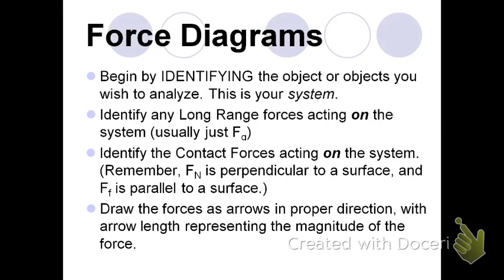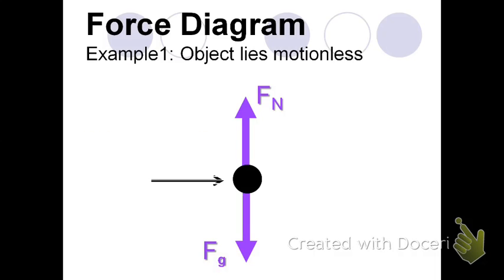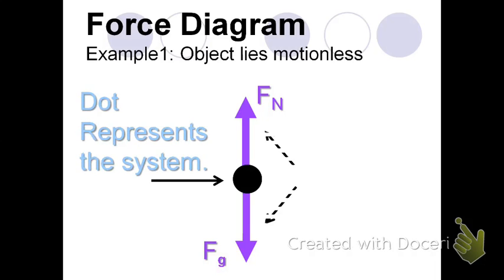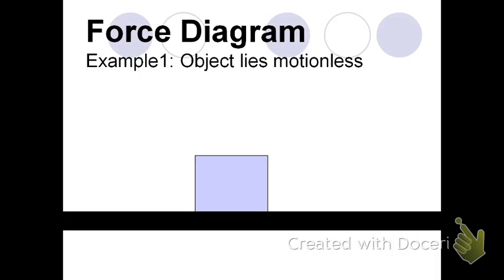You then draw the forces as arrows in the proper direction, with the arrow length representing the magnitude of the force. So here, for example, we have an object lying motionless. So the force diagram for this, we have a dot representing the system, and then arrows representing the forces. There's a gravitational force down and a normal force up. What is touching the box? The table. And so the table, there's a surface there. It exerts a force perpendicular to the surface, and that's the normal force.